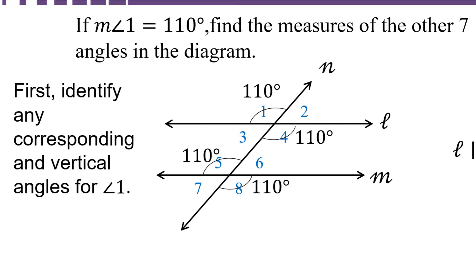But once we know angle 5, angle 8 is a vertical angle for angle 5 so we also know that angle. So so far we have angles 1, 4, 5, and 8 are all 110 degrees.